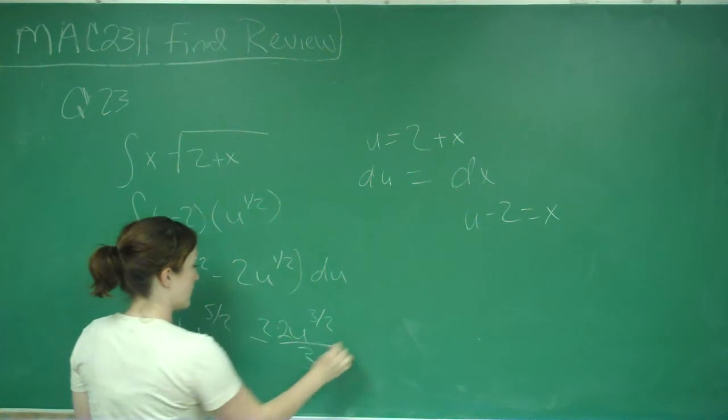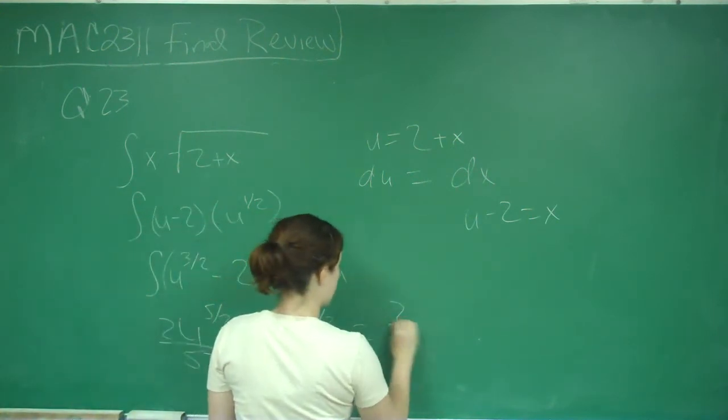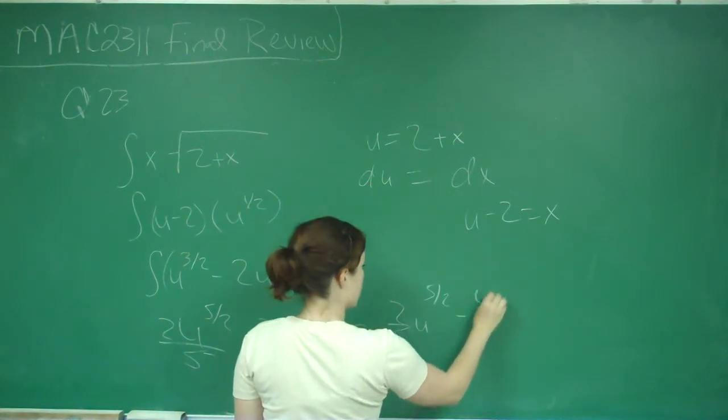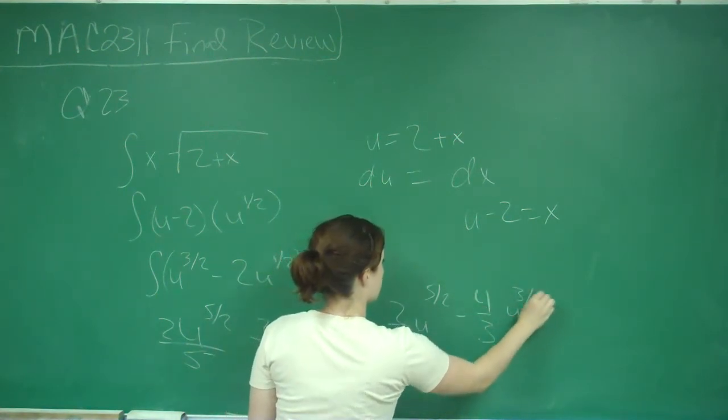We already have a 2 there, so this gives us 2/5 u to the 5/2 minus 4/3 u to the 3/2.